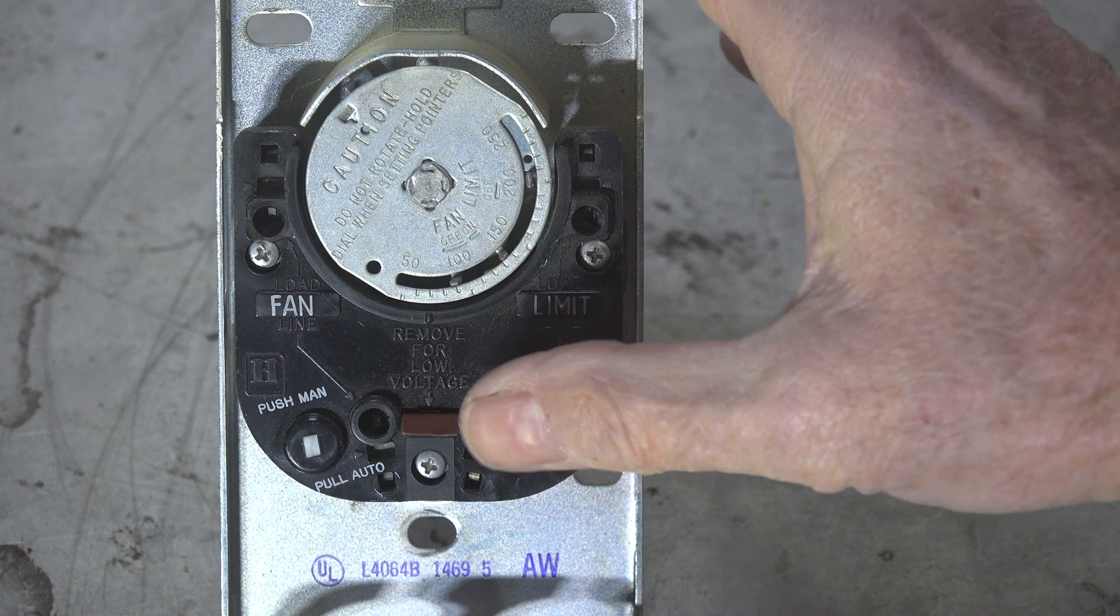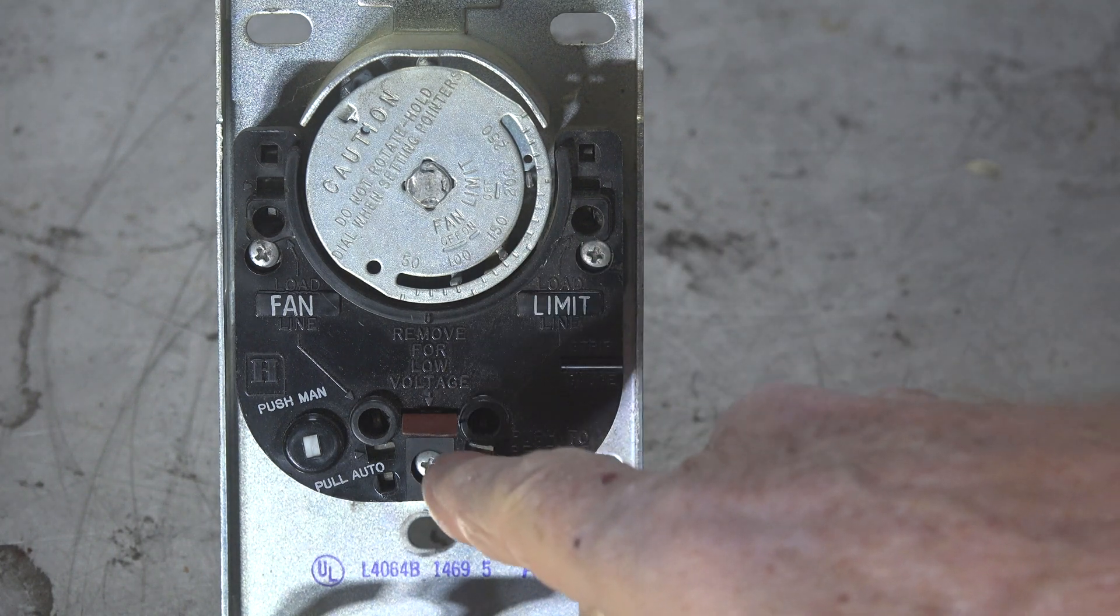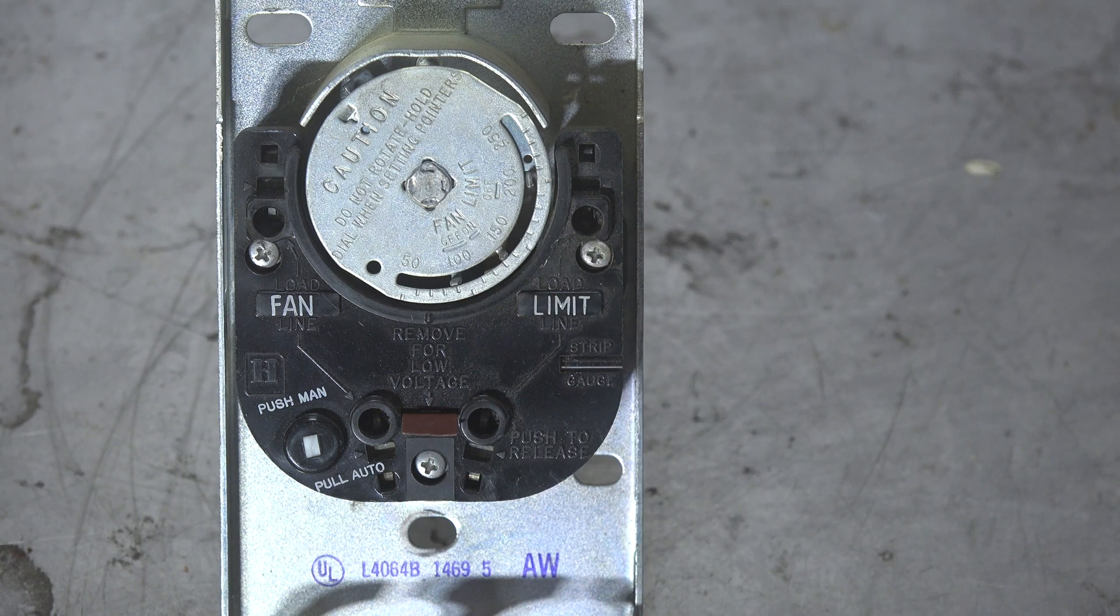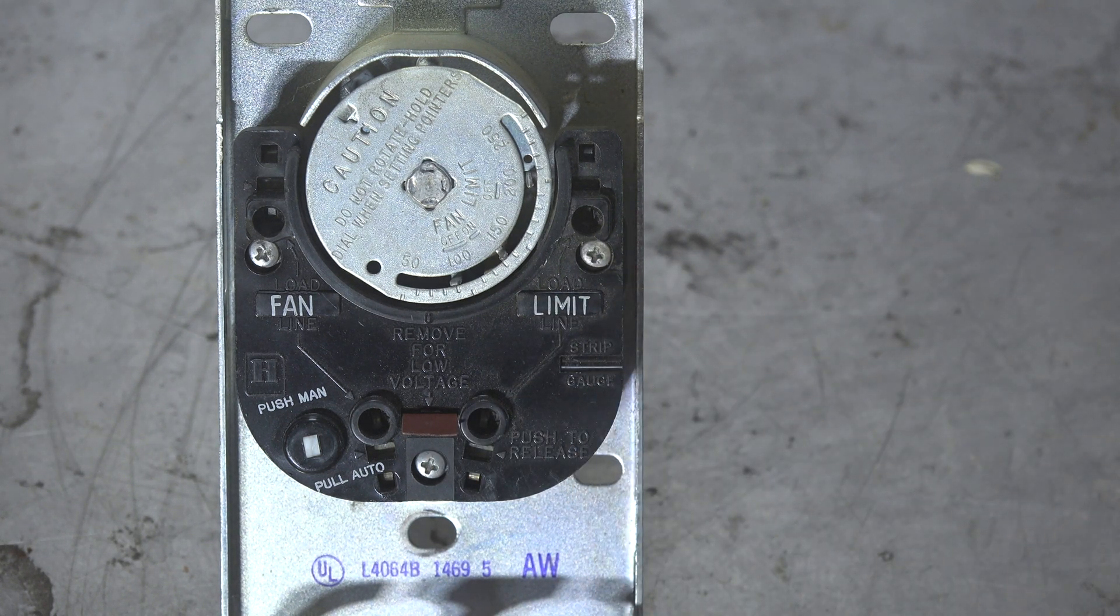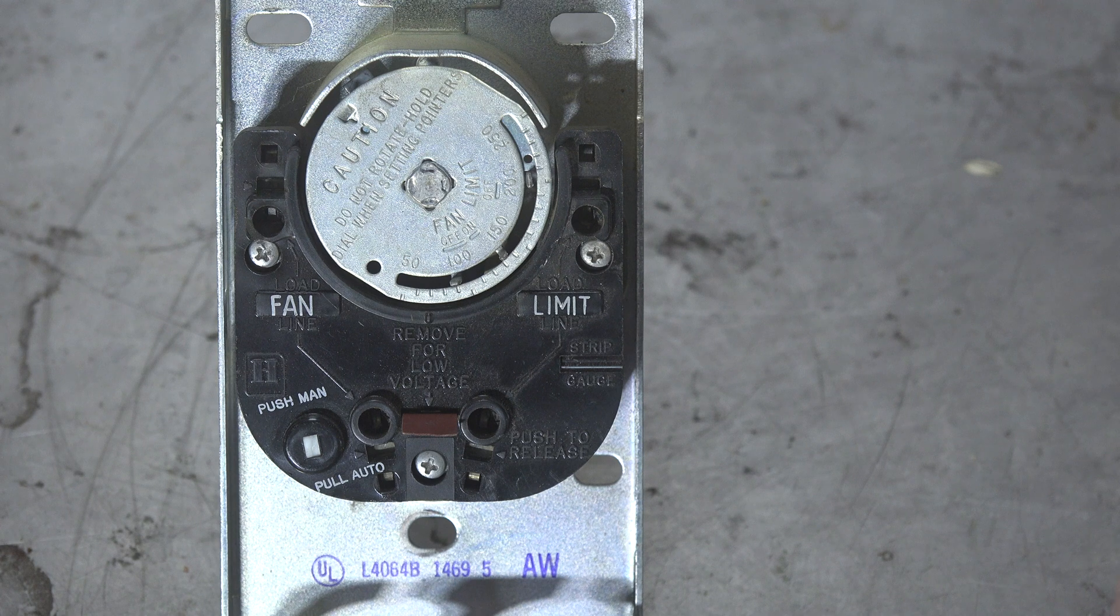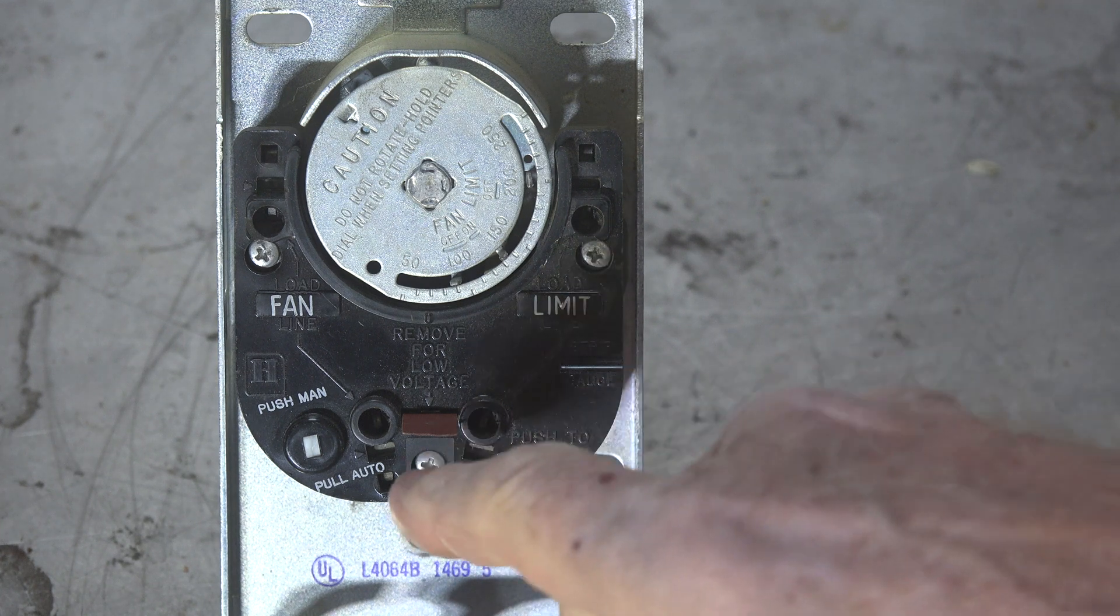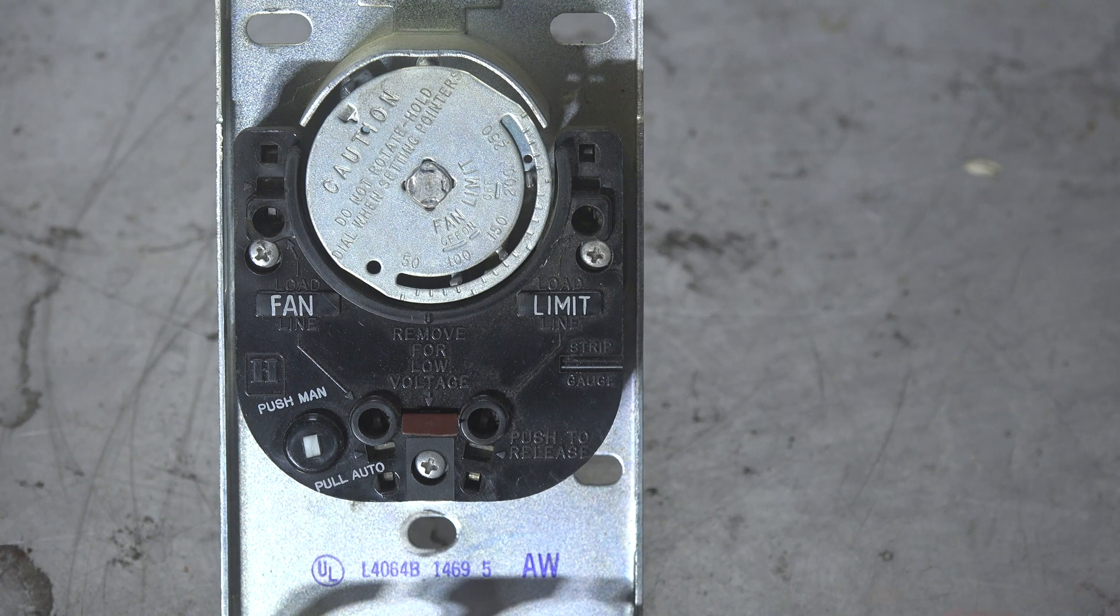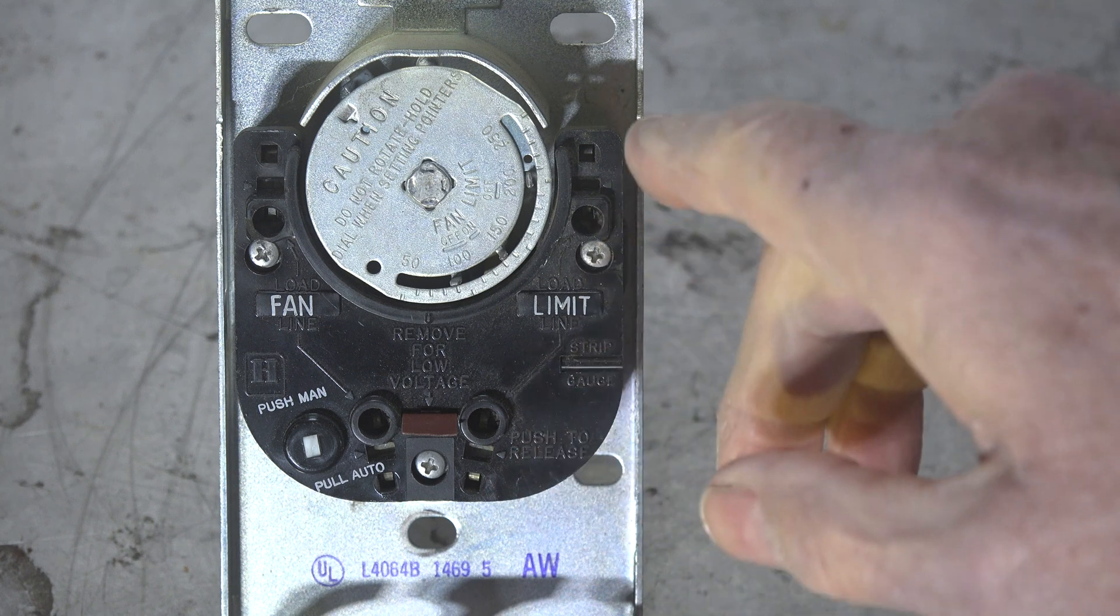This little flappy thing here—it's kind of hard to see—if you pull that out, or there's kind of a copper jumper inside there. Some of them you had to actually take a pair of needle nose and break off that jumper, because you don't want the 120 volts feeding over into the 24. So you break that jumper.